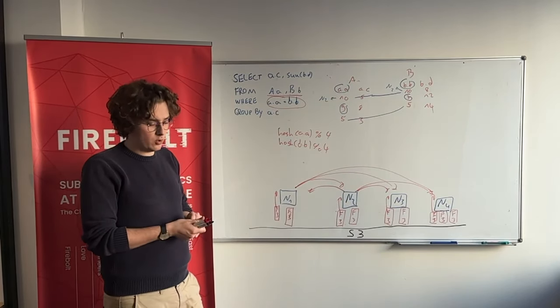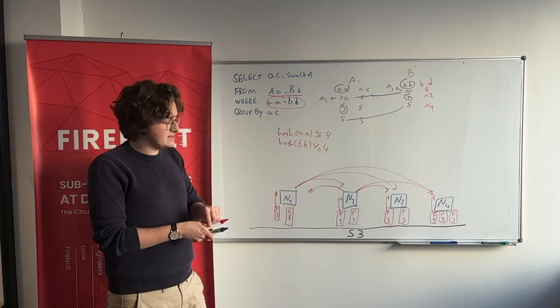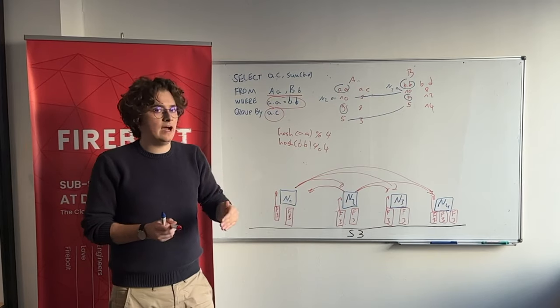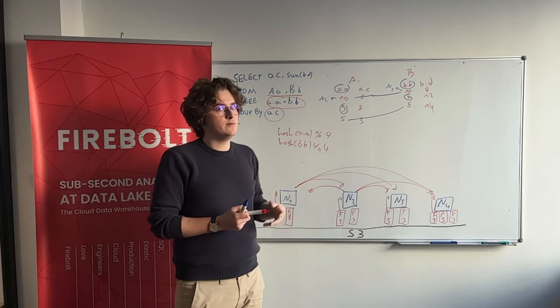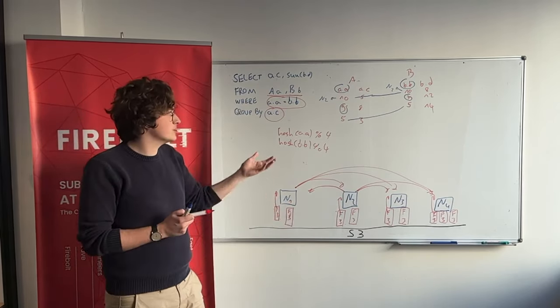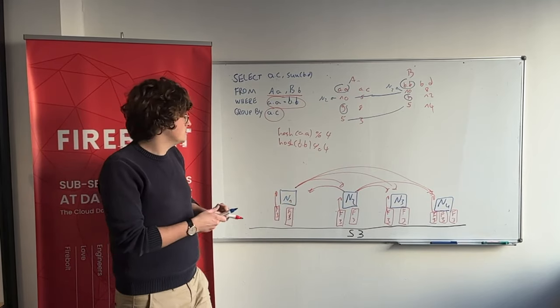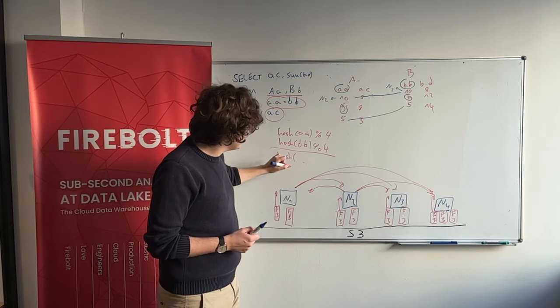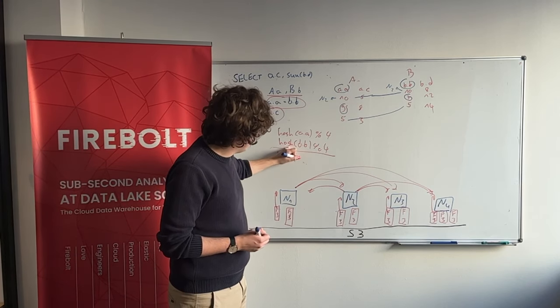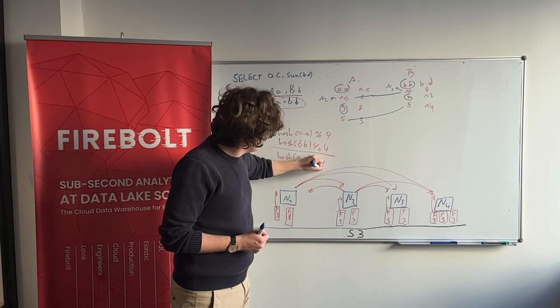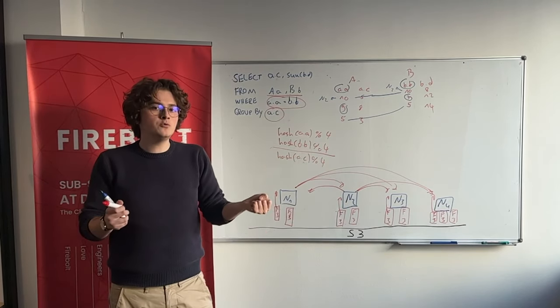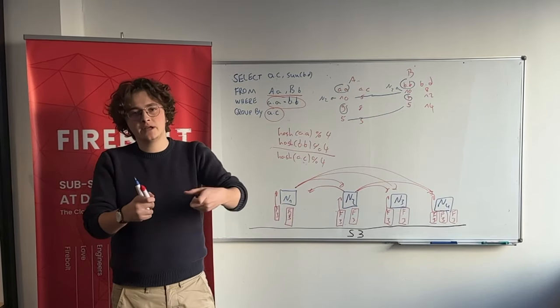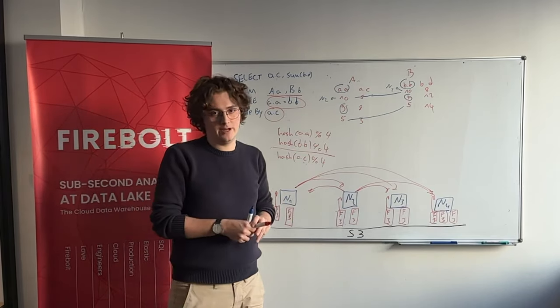At the end of this query, we do an aggregation by A.C. And now we do the same thing again. But this time, we partition by A.C. So in this kind of final stage of the query, we will compute, after the local join, the hash on A.C, take it again modulo 4. And now all the rows which are supposed to be aggregated end up on the same node, get aggregated locally, and we return the correct result.